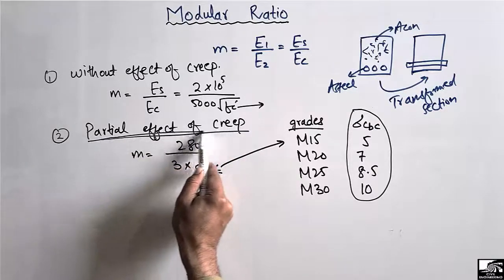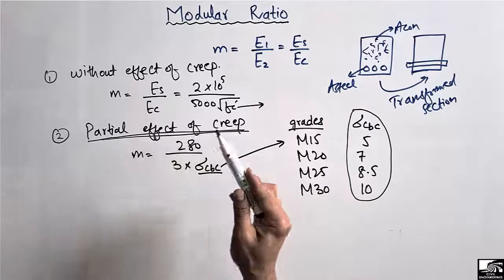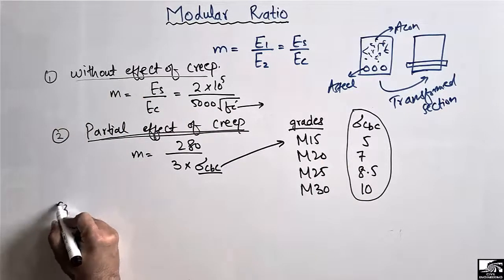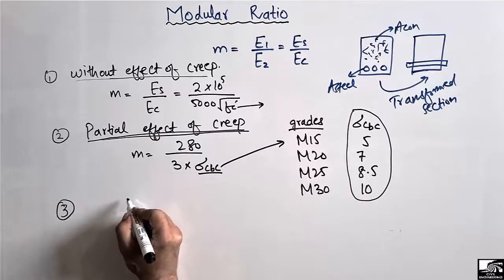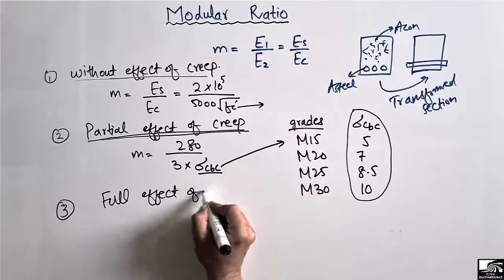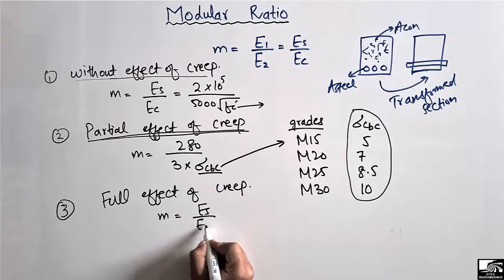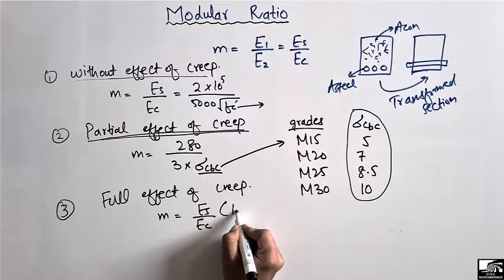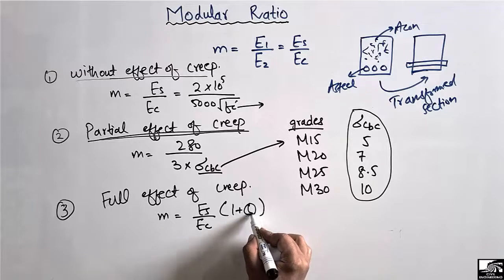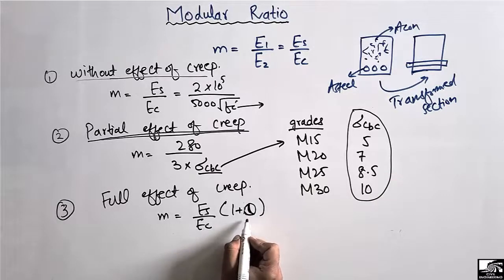The partial creep formula is mostly used in the Working Stress Method of design. There is also a third formula for the full effect of creep, given as: m = (Es / Ec) × (1 + θ). The value of θ can be found in IS 456:2000 and depends on the age of the concrete.